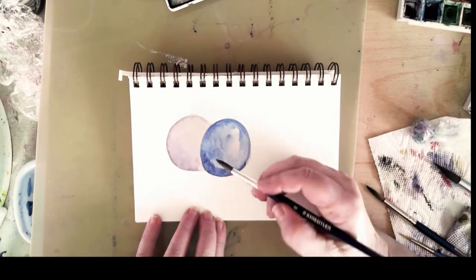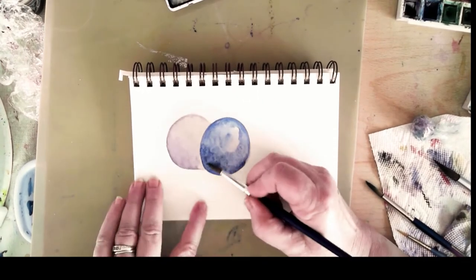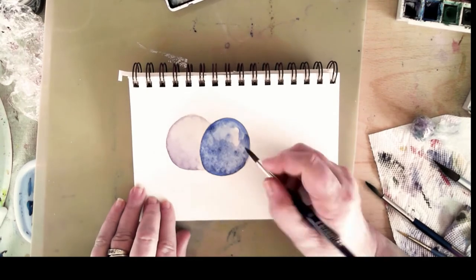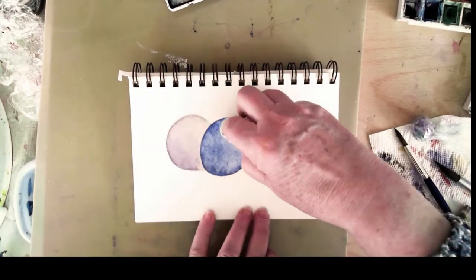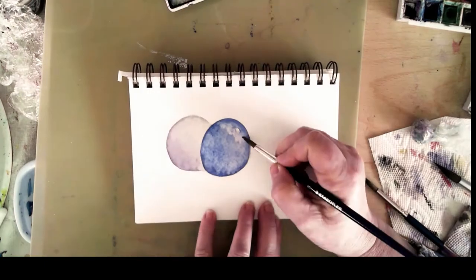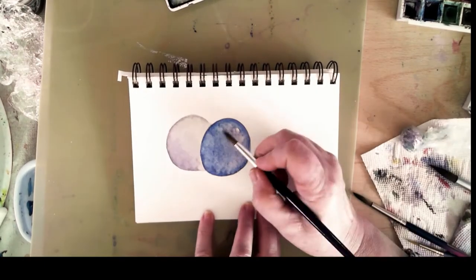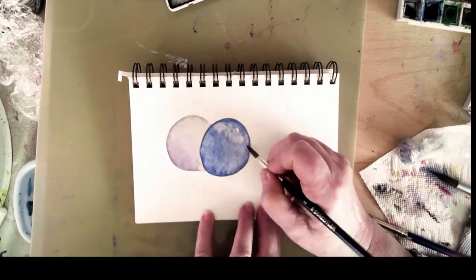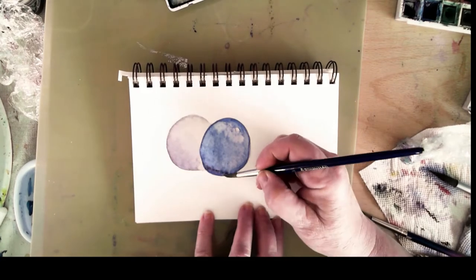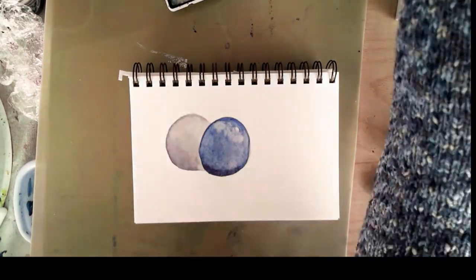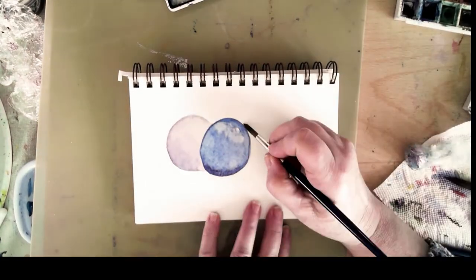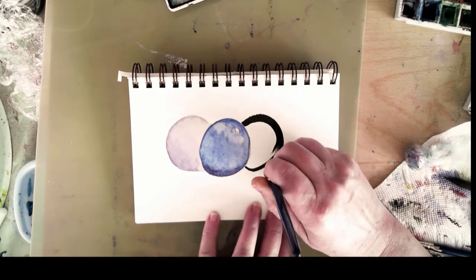You can see that I'm putting down color on the page, and I'm going to be building up tonal values at the base of each of the plums. Right now, there's only two there, but there will be a third one coming. And I also will be blotting off some of the paint, as you can see here, just to provide a highlighted area.